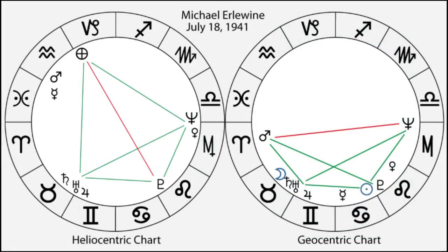It gives us a glimpse into our inner motivation — what's been called the Dharma chart, or the life path chart. Combining these two unique charts into a single integrated view provides the equivalent of a 3D view of our birth moment.